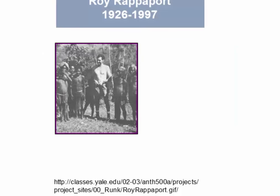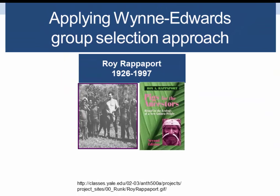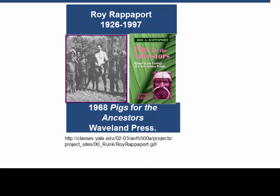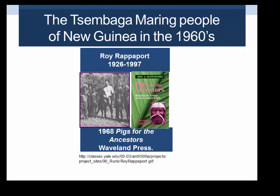In applying Wynne-Edwards' group selection approach, one anthropologist really stands out: Roy Rappaport, who died the same year as Wynne-Edwards, in 1997. Rappaport did his dissertation work in Papua New Guinea and wrote a famous book called Pigs for the Ancestors, which applied Wynne-Edwards' approach to understanding ritual processes among the Tsembaga Maring. The study was done in the early 1960s and published originally in 1968. Rappaport's idea was that warfare, which was rather ritualized, might operate as a homeostatic process — helping to keep balance in the human populations in the area.